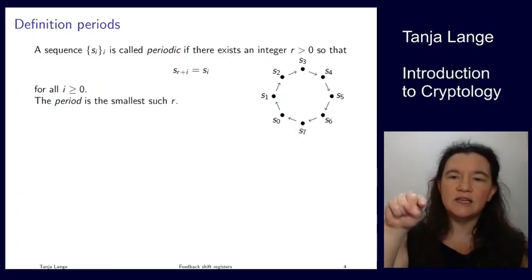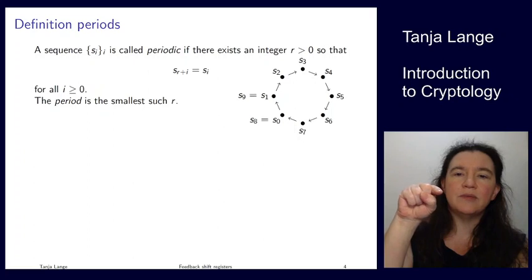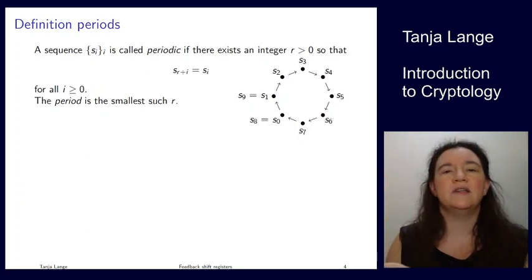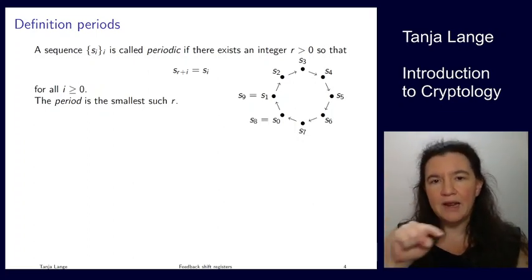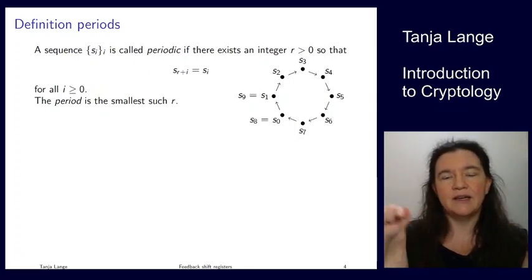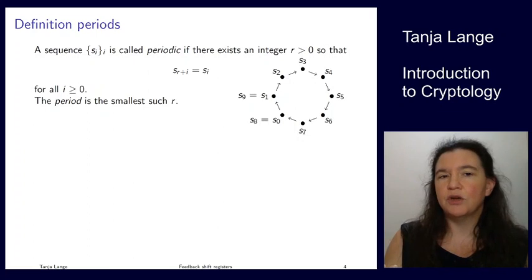And you see that the s7 runs into the s0, so from the s0 that's the same as s8, s1 is the same as s9, and so on. So it's just going to repeat. So if there is some length after which you see the same entries again, and again, and again, then we call this function periodic.